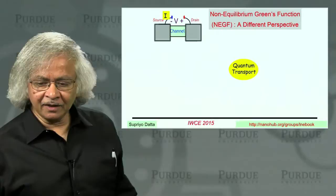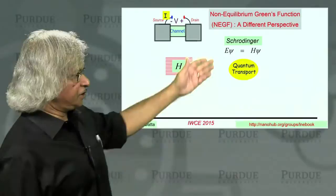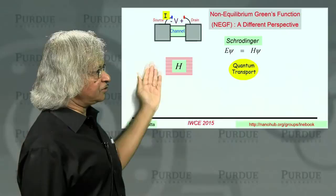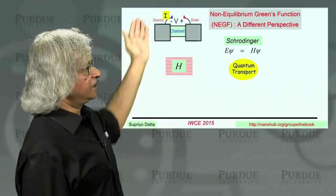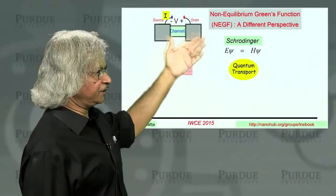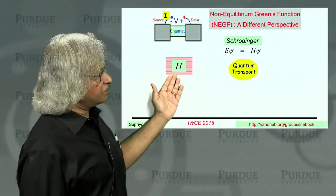Now, in quantum transport, you would expect things to start from the Schrodinger equation where you have this matrix H whose eigenvalues describe the energy levels in the channel. And we are interested in nanodevices where you have contacts across this channel, usually called the source and the drain. And when you apply a voltage, current flows.